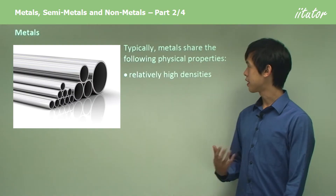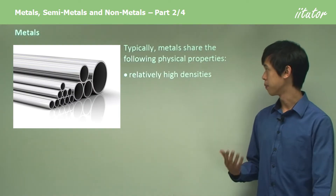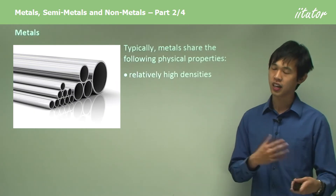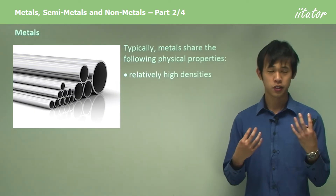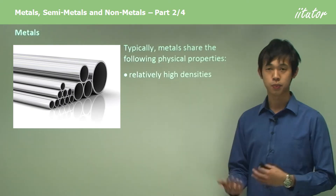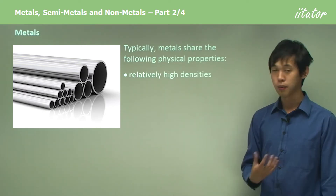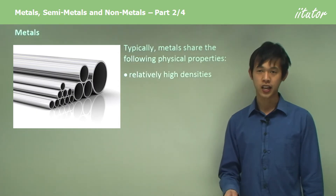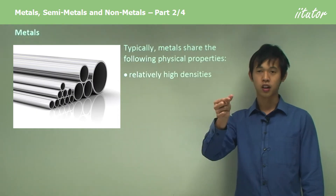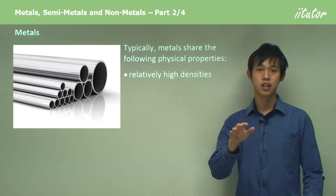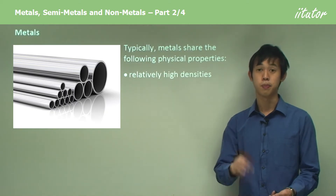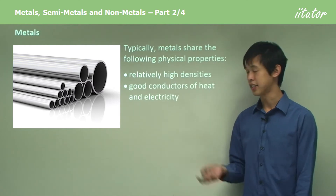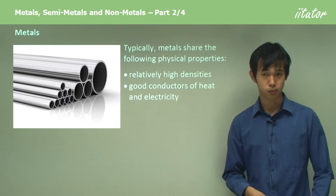Metals have the following physical properties. If you were to describe a metal to someone who's never heard of one, a metal is usually quite dense — they have quite high density. If I had a centimeter cubed of lead, it would weigh quite a lot compared to a centimeter cubed of air. So metals are very dense compared to gas, and often they're good conductors of heat and electricity.